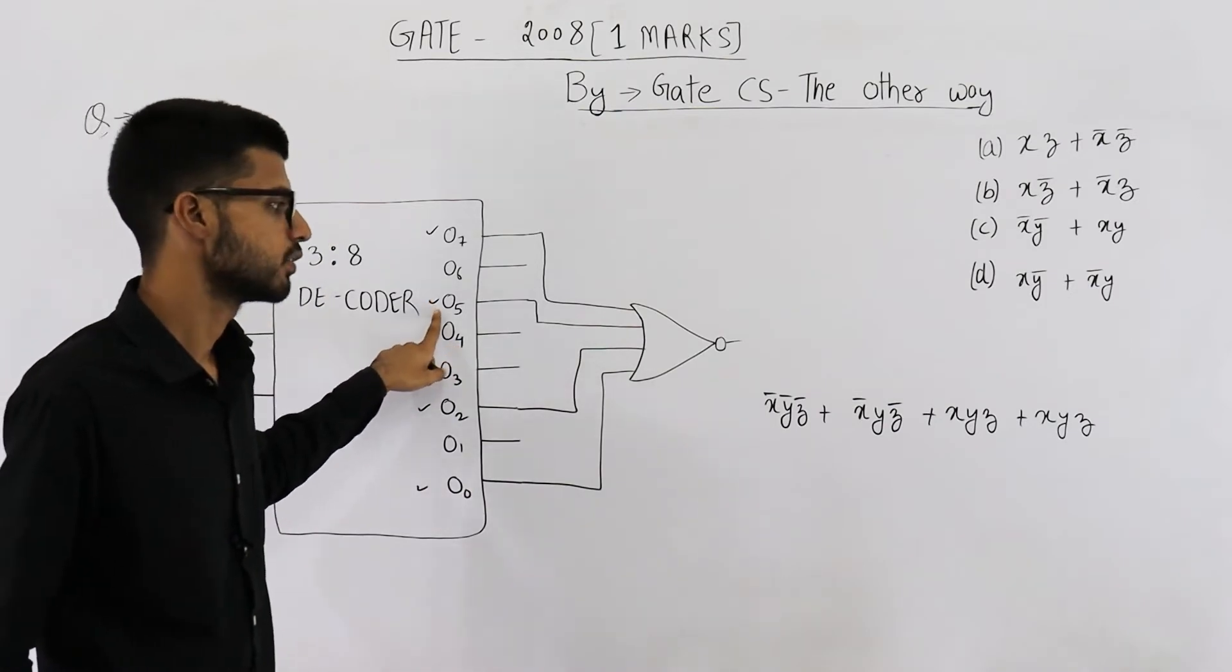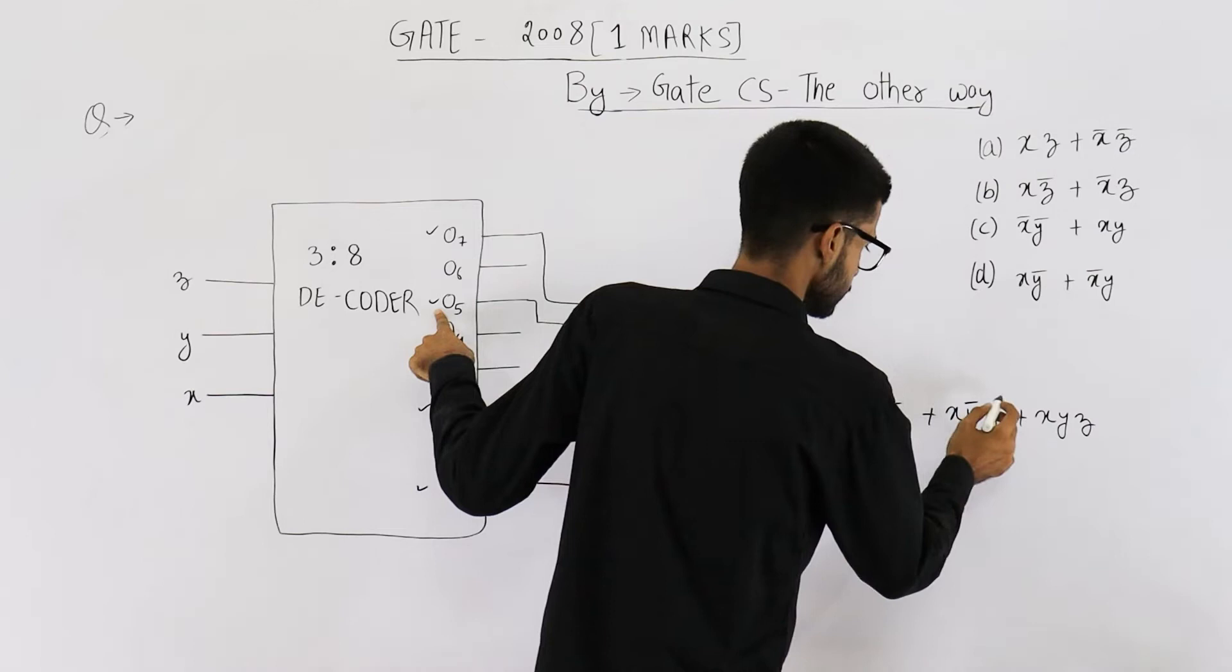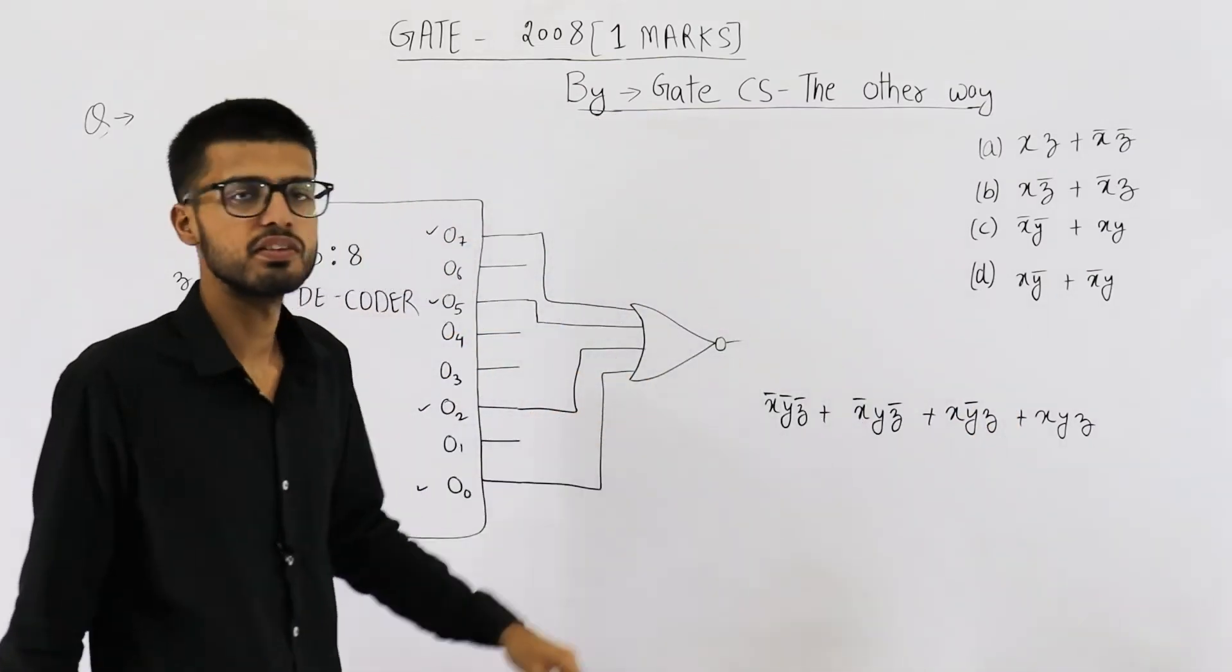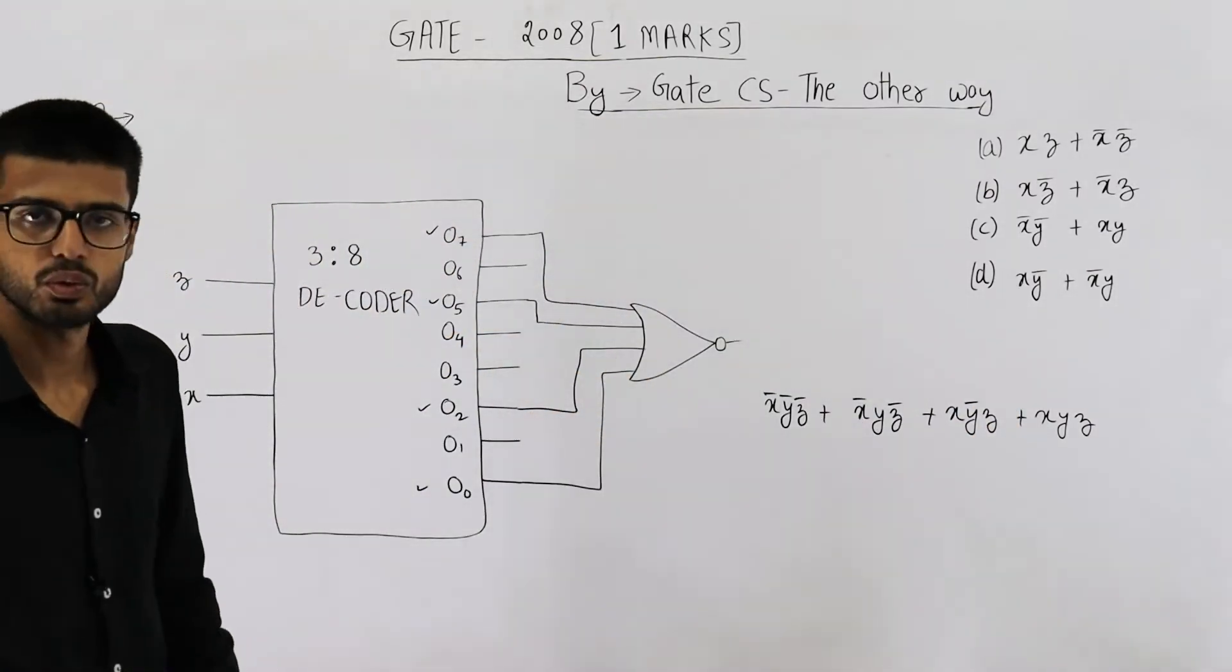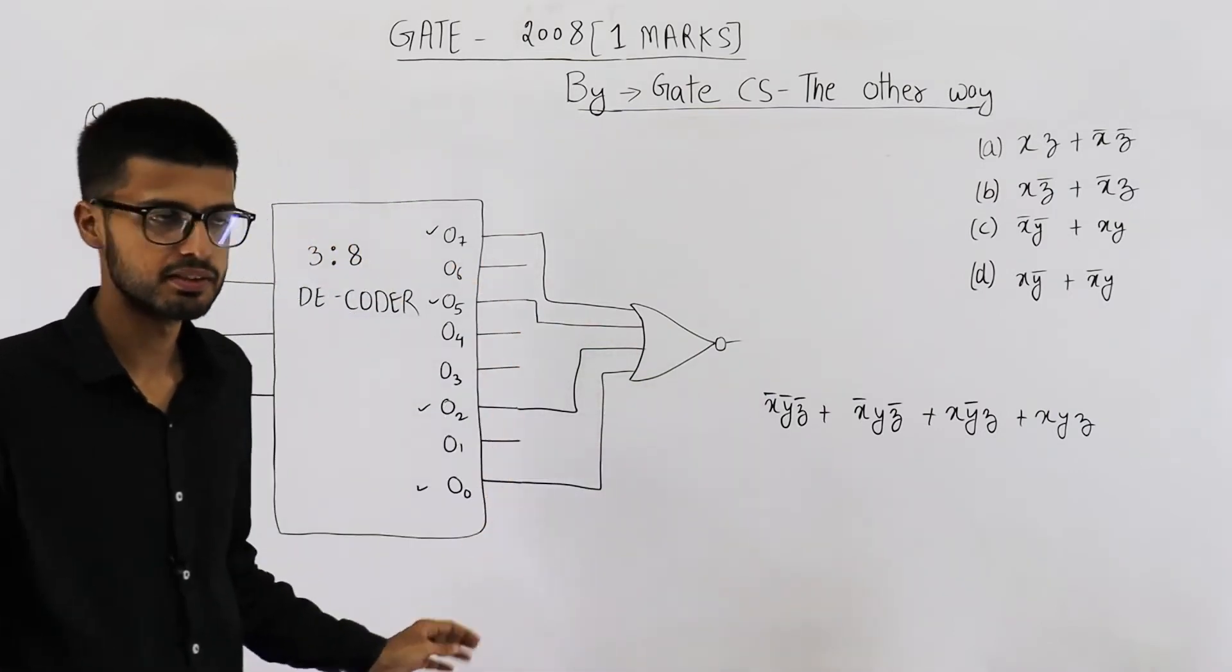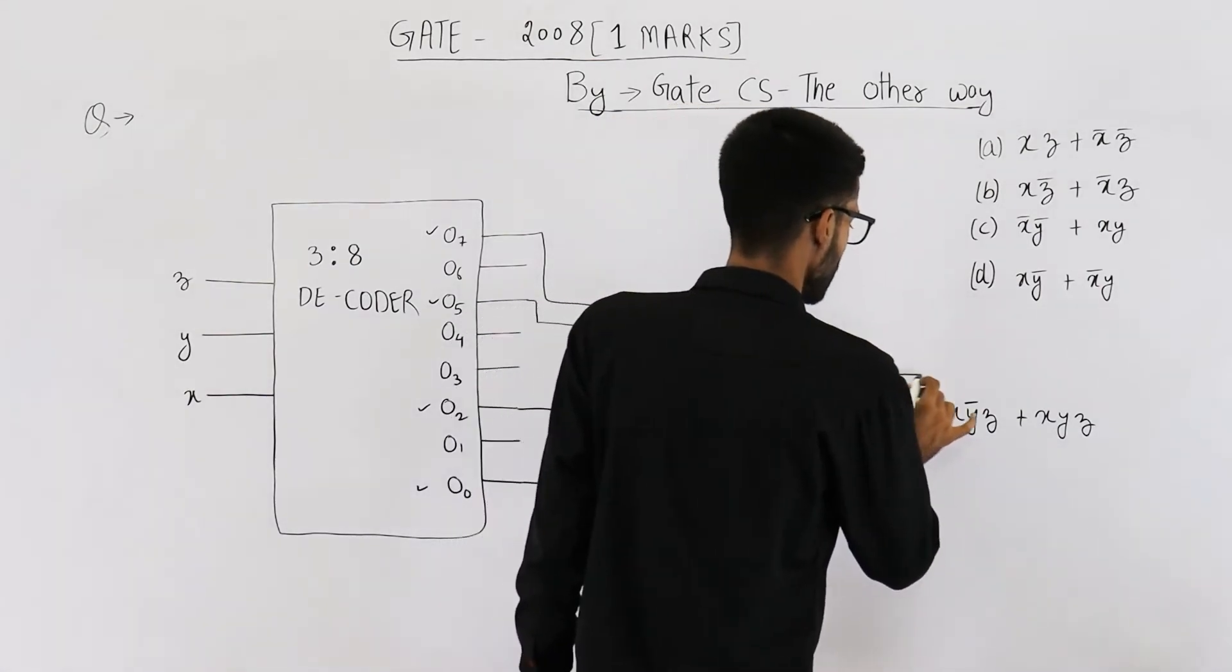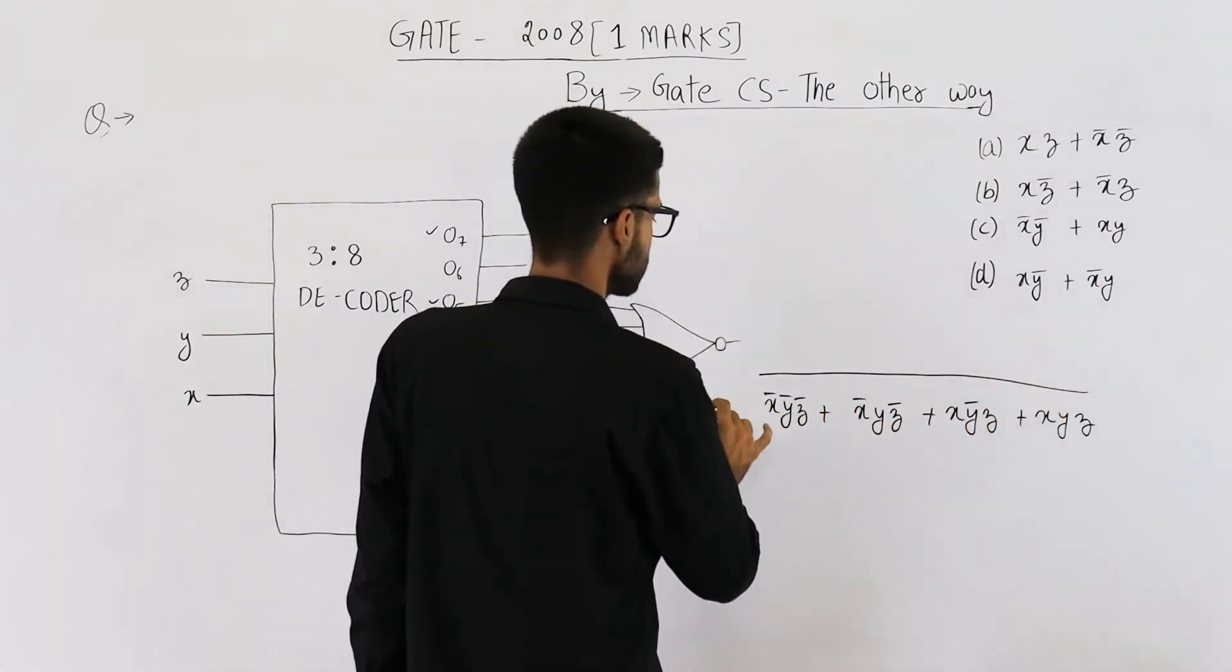O5 will be on when values are 1, 0, 1. And O7 will be on when values are 1, 1, 1. Now we have performed the OR of these, but we want a NOR, so I am taking the whole complement. This is your output.